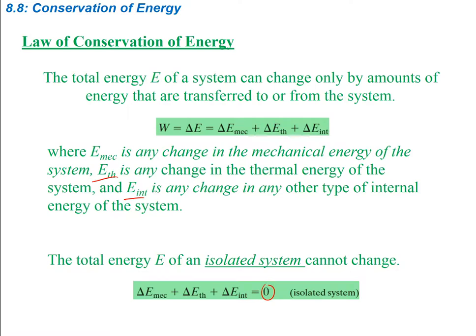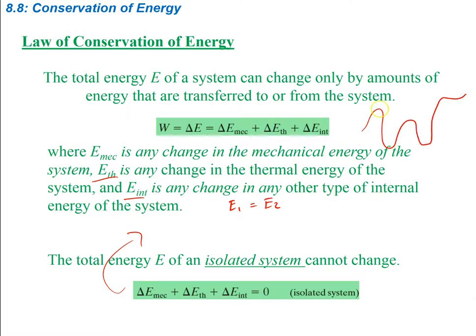We're really asking: is this an isolated system, or is there some external force acting on it? This equation can also be written as: energy at point 1 equals energy at point 2. These can be any two points in the problem — not necessarily the beginning and the end. For instance, if you had a roller coaster, and you knew how much energy was at one point, you could find how much energy was at another point, as long as you knew the height. You just want to pick points that are convenient, where you know some of the information.